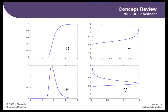Looking at E: it's non-decreasing at first glance, similar to a CDF — but it has negative y-values. For a CDF, the y-axis represents probability, which must be between zero and one. E maps outcomes to negative values like -0.5, which are not valid probabilities. So E is definitely not a CDF. And it can't be a PDF either, because densities must always be greater than or equal to zero — E has negative densities. So E is neither.